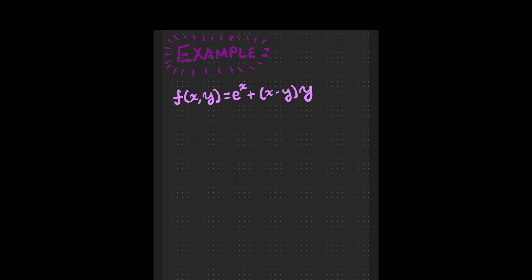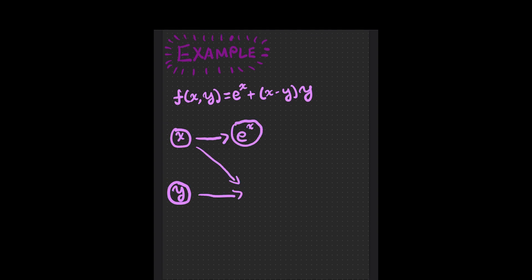Here's a function with two inputs. You can break this f into a sequence of elementary operations. First, x gets e'd, then you do x minus y, then you multiply the x minus y by y, then you add the e'd x with the x minus y by y thing, and tada, if you follow that sequence, you get your answer.